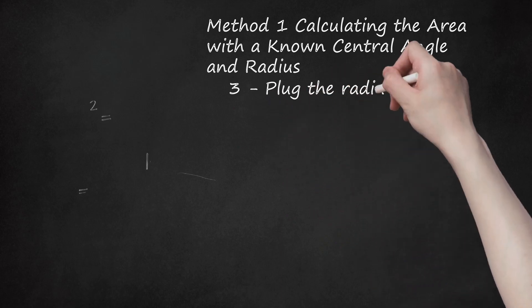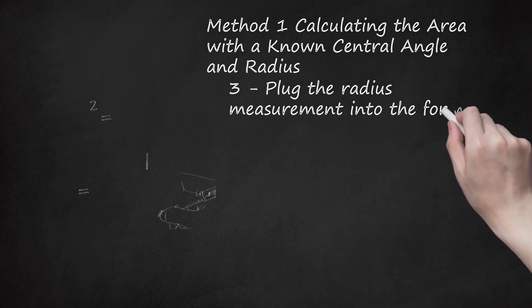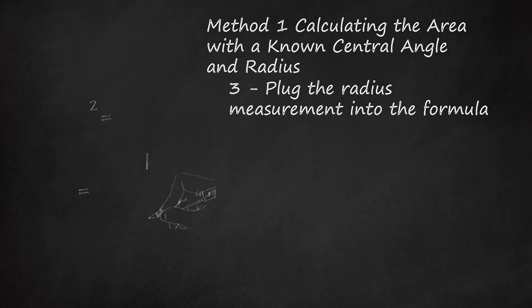Step 3: Plug the radius measurement into the formula. Square the radius and multiply it by pi (3.14). Doing this will allow you to calculate the area of the whole circle. For example, if the radius is 5 cm, you will square 5 to get 25, and then multiply 25 by 3.14 to get 78.5.